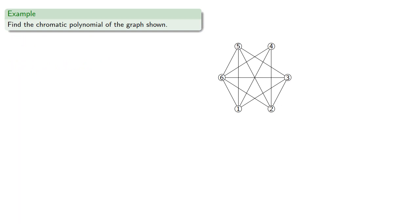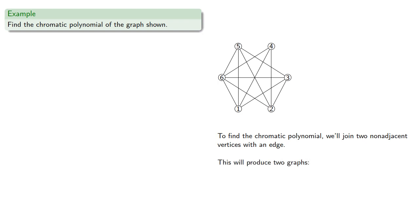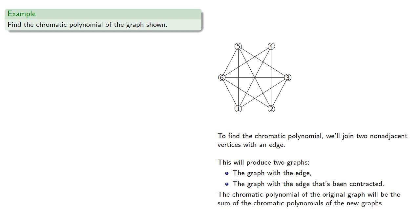For example, here we have a graph with many edges, so let's find our chromatic polynomial. Remember what we're doing to find the chromatic polynomial: we join two non-adjacent vertices with an edge, and this will produce two graphs — the graph with that edge and the graph with the edge contracted. The chromatic polynomial of the original graph will be the sum of the chromatic polynomials of the new graphs.